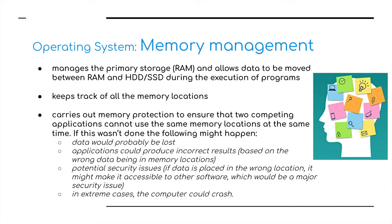First of all, memory management. The operating system manages the primary storage — the RAM — and allows data to be moved between RAM and the hard disk or SSD during the execution of programs. It keeps track of all memory locations and carries out memory protection to ensure that two competing applications cannot use the same memory locations at the same time. If this wasn't done, data would probably be lost, applications could produce incorrect results, there would be potential security issues, and in extreme cases the computer would inevitably crash — the blue screen of death.